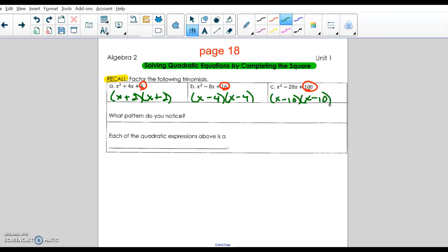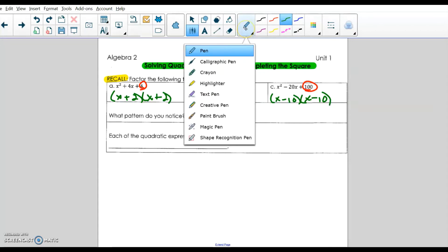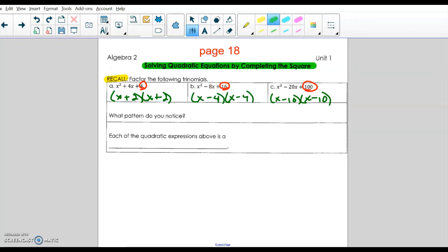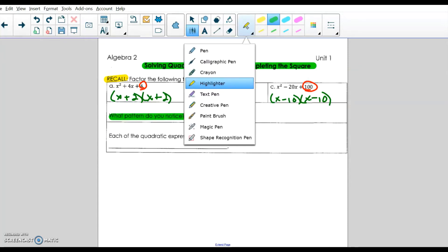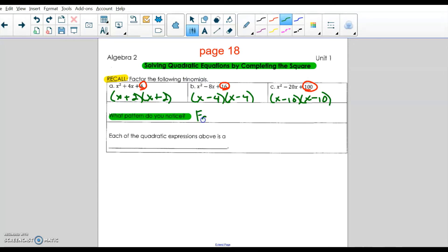Okay, well what you're supposed to notice when you do this is that the binomials, the binomial factors, are exactly the same. So the factors are the same and can be written as a binomial squared. For instance, like this C problem could be written as x minus n squared.